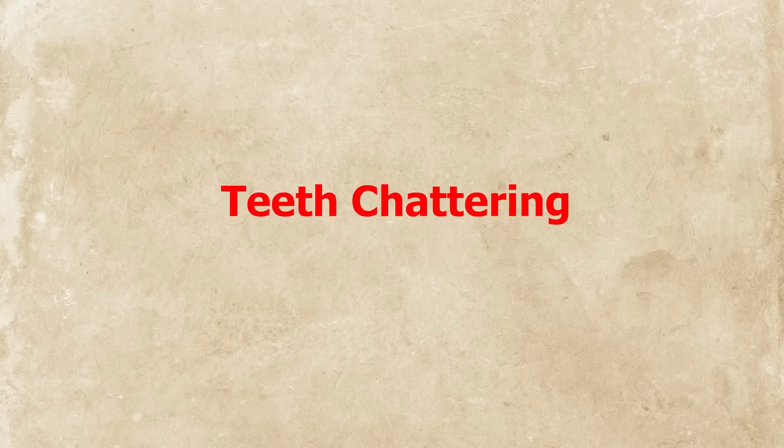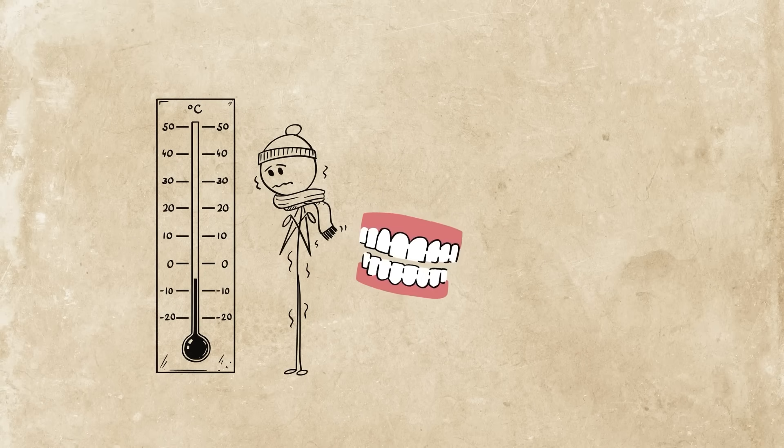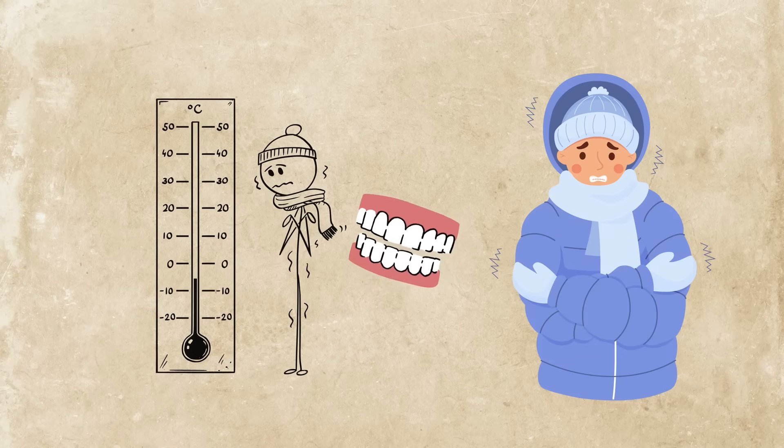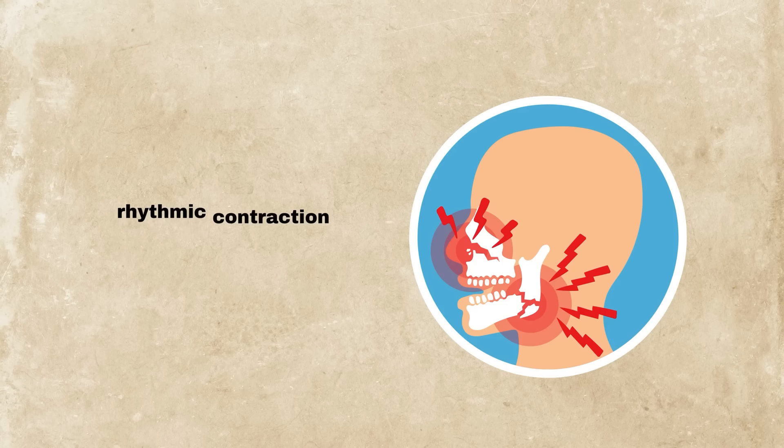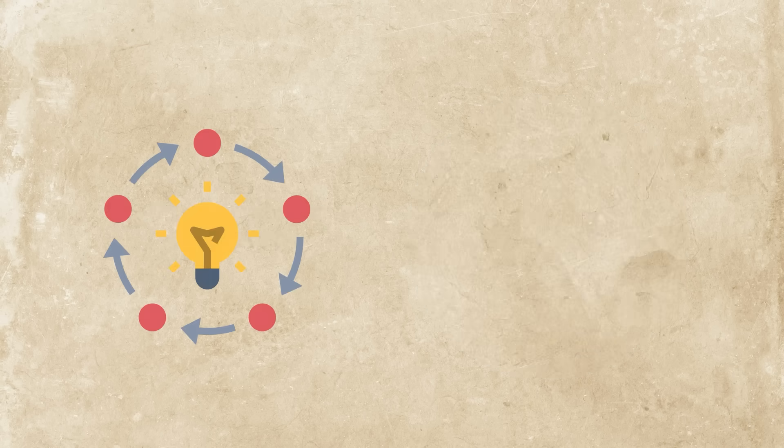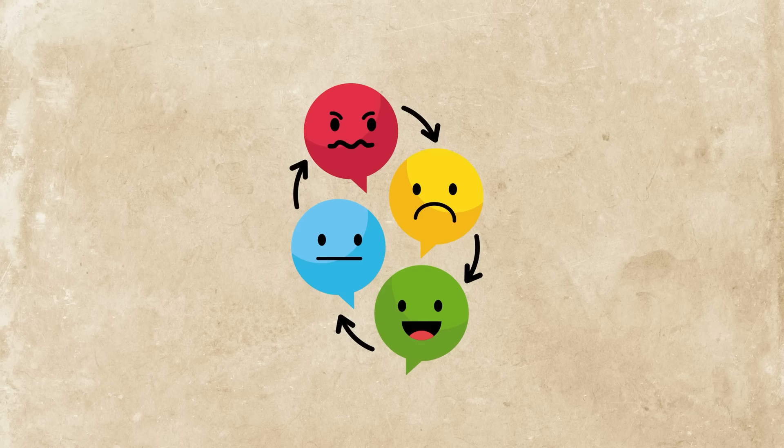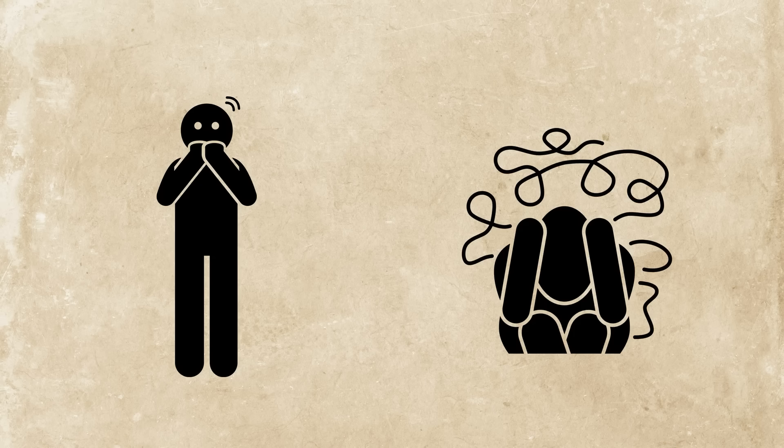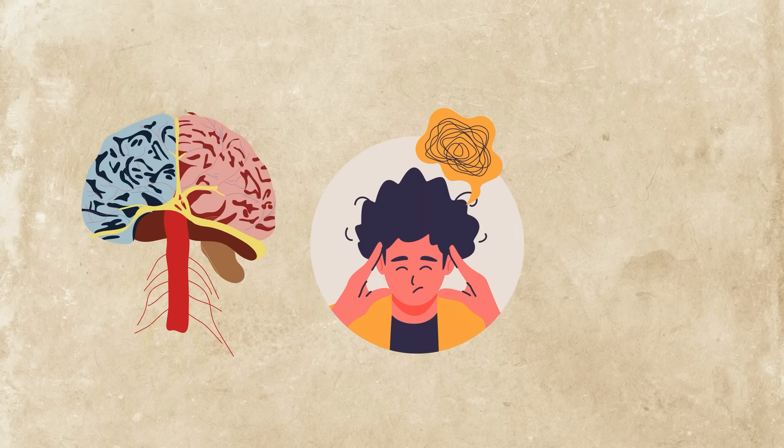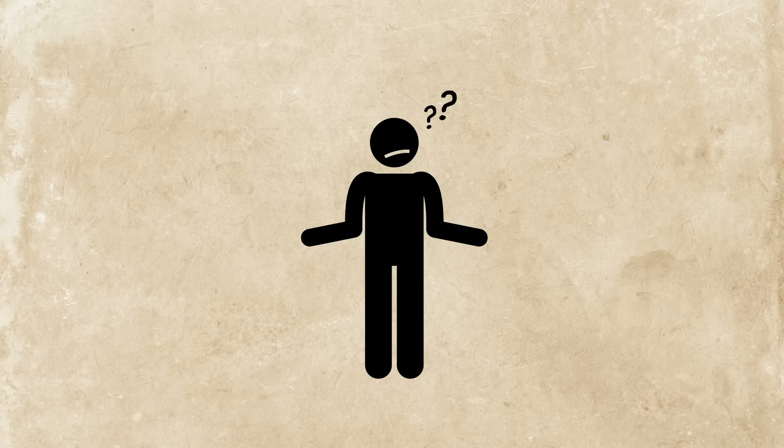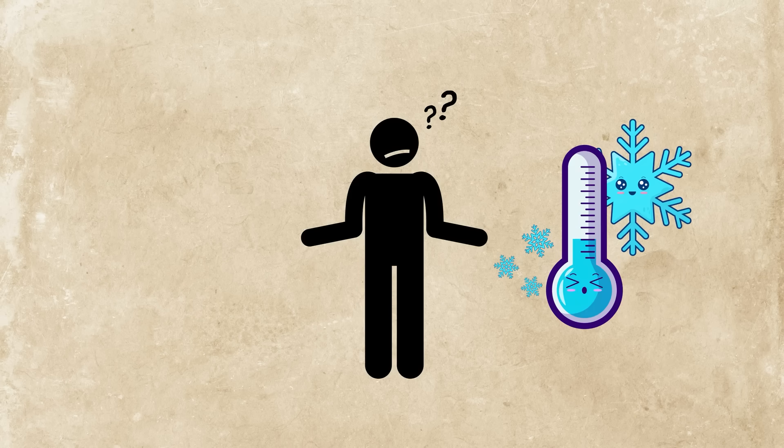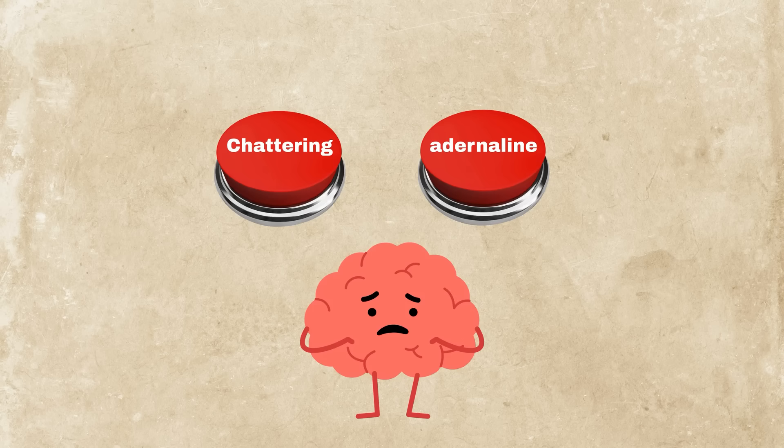Teeth chattering. You're cold and your teeth start shaking like you're freezing in a cartoon. Chattering is a rhythmic contraction of jaw muscles, a way to create heat, just like shivering. But it's not only caused by cold. Strong emotions like fear or anxiety can also trigger it. That's your sympathetic nervous system treating psychological stress as a physical threat. It doesn't always know the difference between freezing temperatures and stage fright, so it sends the same shaky command either way.